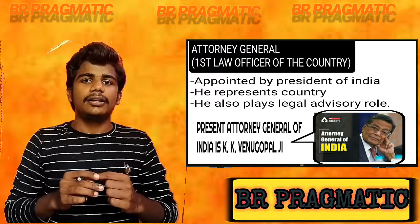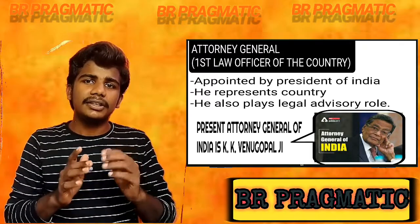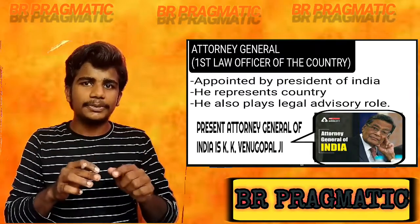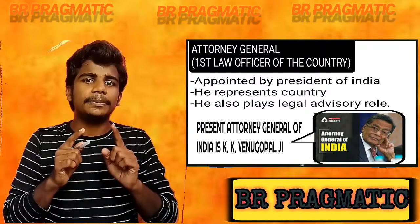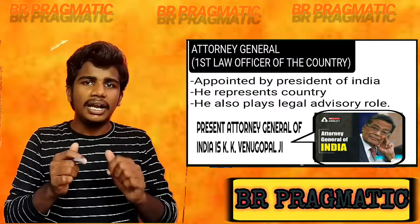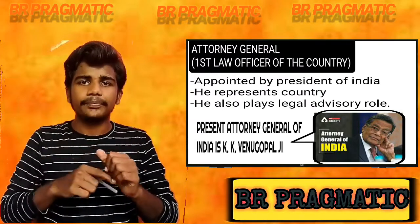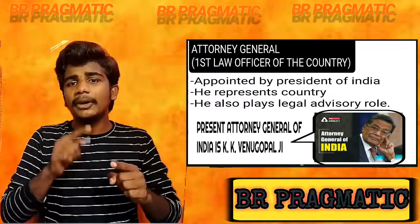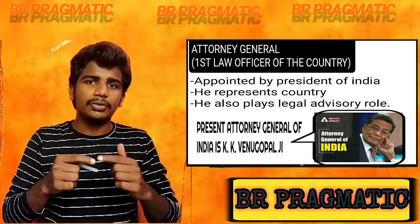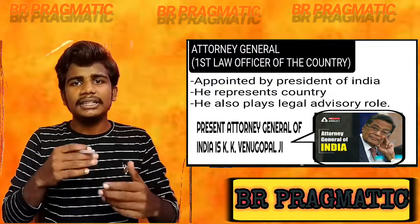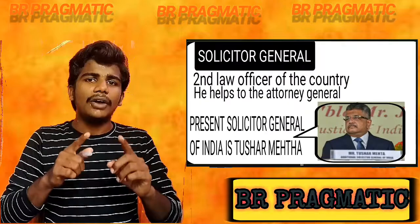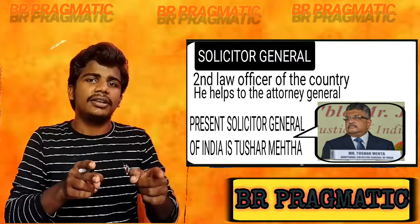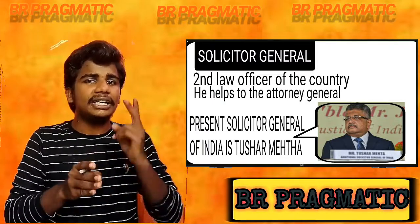Now we will discuss the Attorney General. Just as the Advocate General represents the state government and is known as the first law officer of the state, similarly the central government is represented by the Attorney General. Their job is to handle cases of the central government and represent them in court — that's why they are known as the first law officer of the country. They are appointed by the President of India. If the central government needs any legal advice on any matter, they take it from the Attorney General. After that comes the Solicitor General, also called the second law officer of the country, who helps the Attorney General in his tasks.